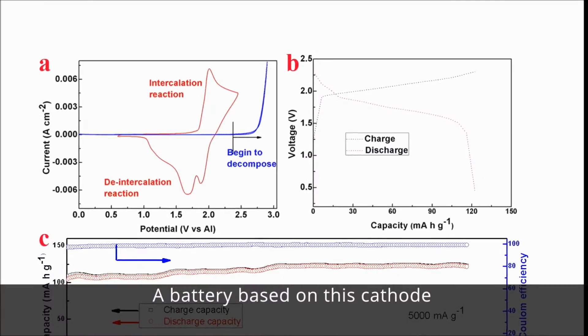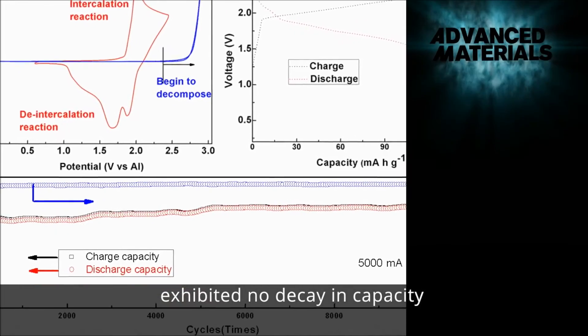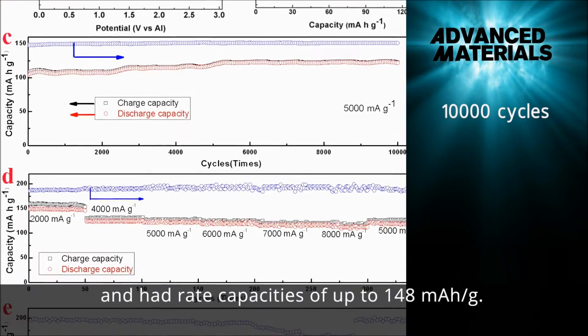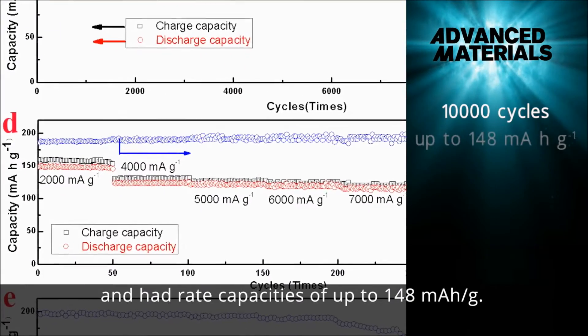A battery based on this cathode exhibited no decaying capacity for an impressive 10,000 cycles and had rate capacities of up to 148 milliamp hours per gram.